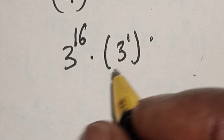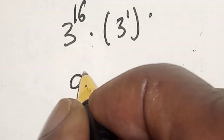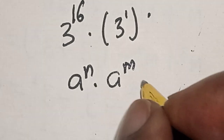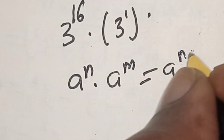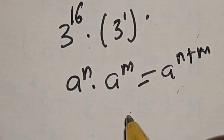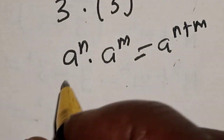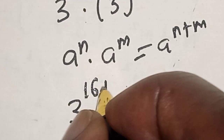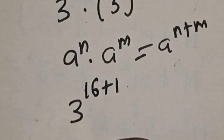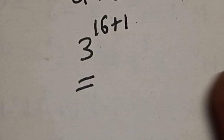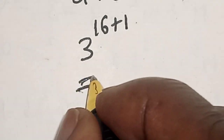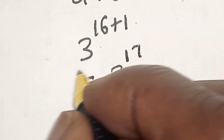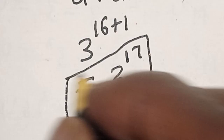Also remember that if you have a raised to power n multiplied by a raised to power m, this equals a raised to power n plus m. So we have 3 raised to power 16 plus 1, which equals 3 raised to power 17. That is our final answer.